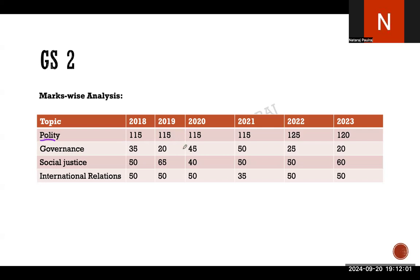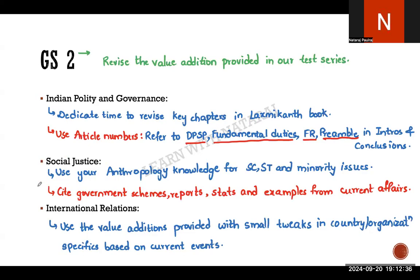Then you have governance, social justice, and international relations — these are relatively smaller chunks. You can even club polity and governance together. Social justice is about ensuring substantive equity for vulnerable groups. IR tends to be approximately four questions — generally four questions: two 10-markers (questions 9 and 10) and your 19th and 20th. So be mentally ready for this format.